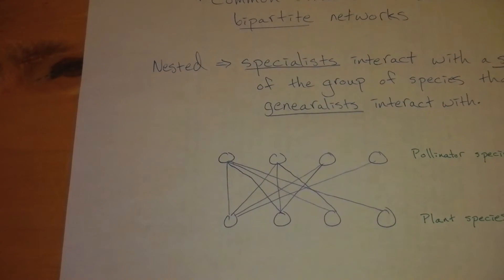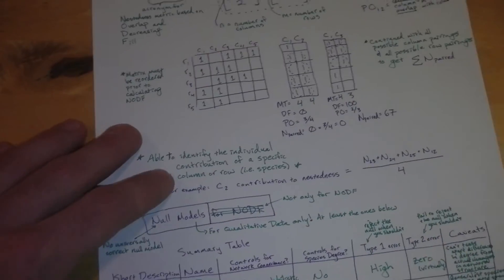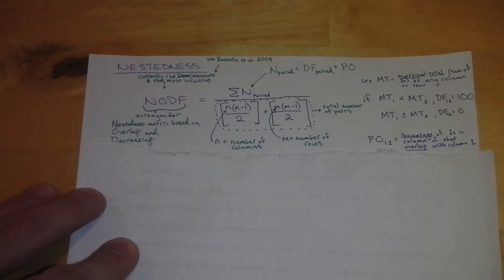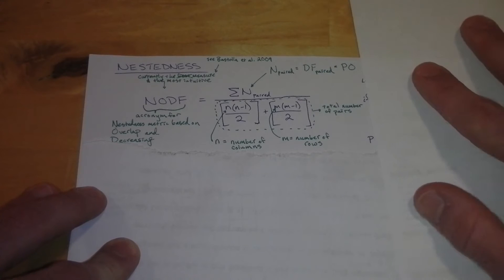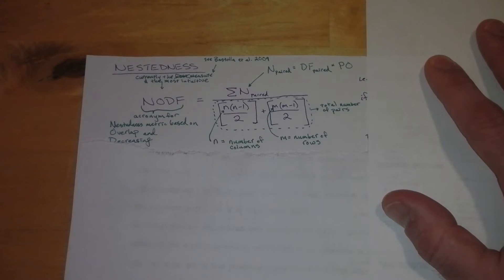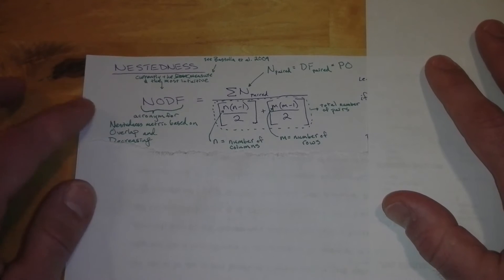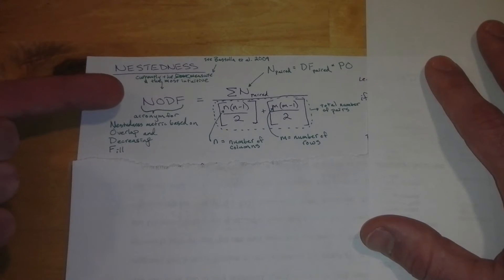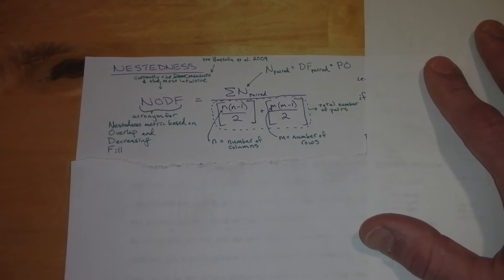So now let's go into a common definition of nestedness. We're going to start off just with this top part right here. One of the most common measures of nestedness is NODF. So what NODF stands for is an acronym for nestedness metric based on overlap and decreasing fill. Right now it's one of the most intuitive measures of nestedness and currently one of the best, except for potentially in dynamical models. You might want to see this reference, Bastolla et al. 2009, but that's outside the context of this tutorial.